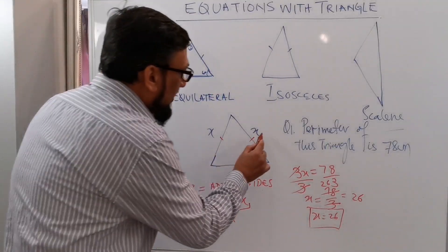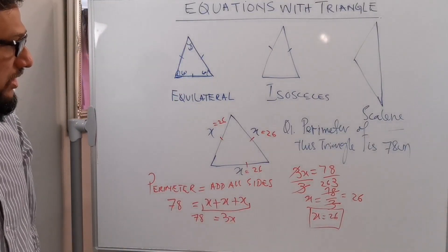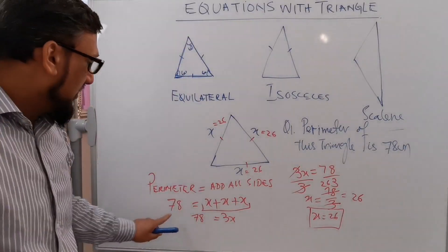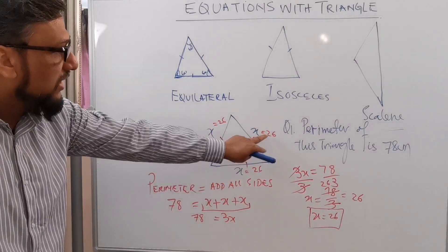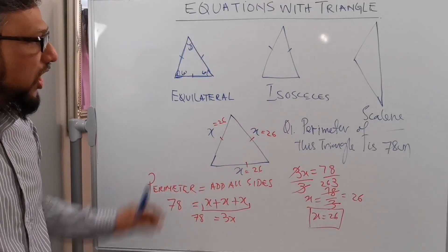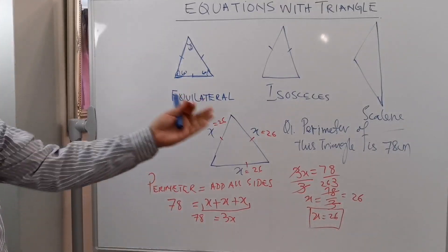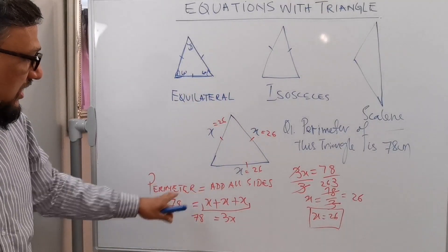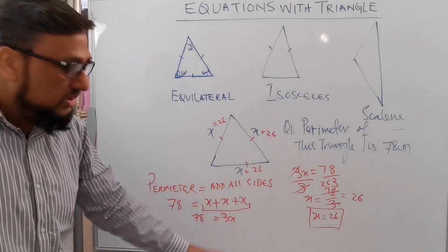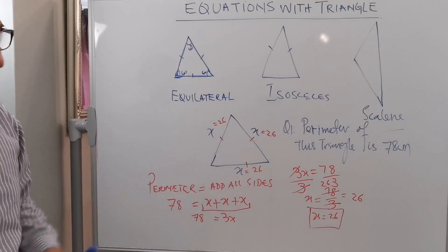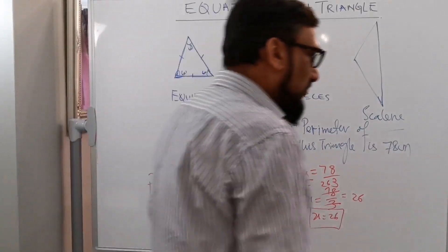Now the value of x is 26, so this side is 26, this side is 26, and this side is 26. If we add all sides we get 78, which matches. So all three side values are the same: 26. That's how we work out equations with triangles — the perimeter 78 equals 3x, and solving gives x equals 26.